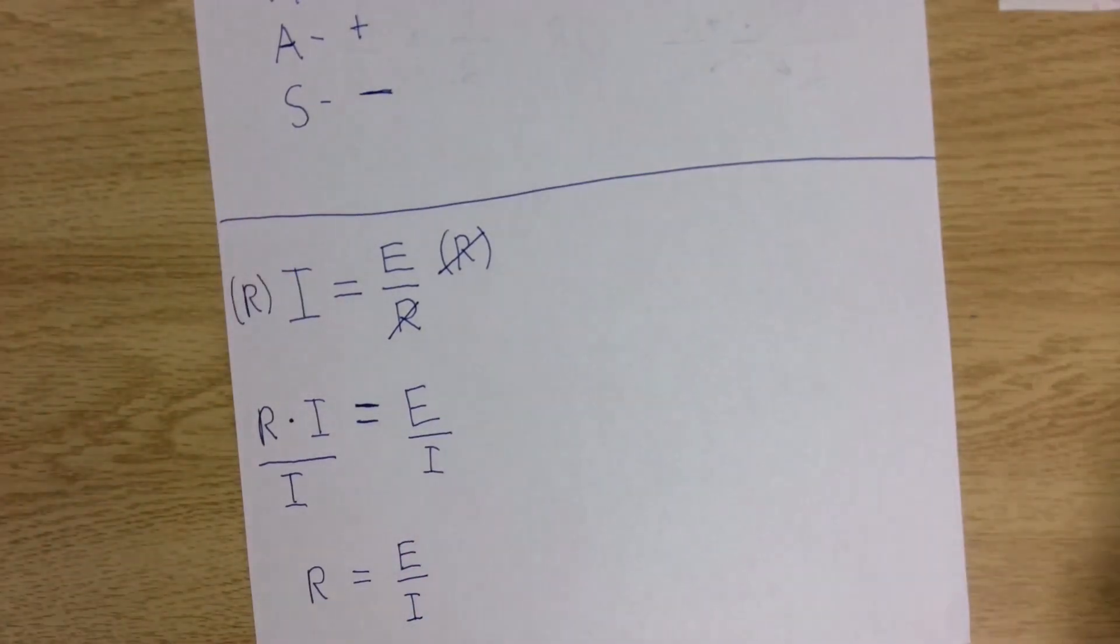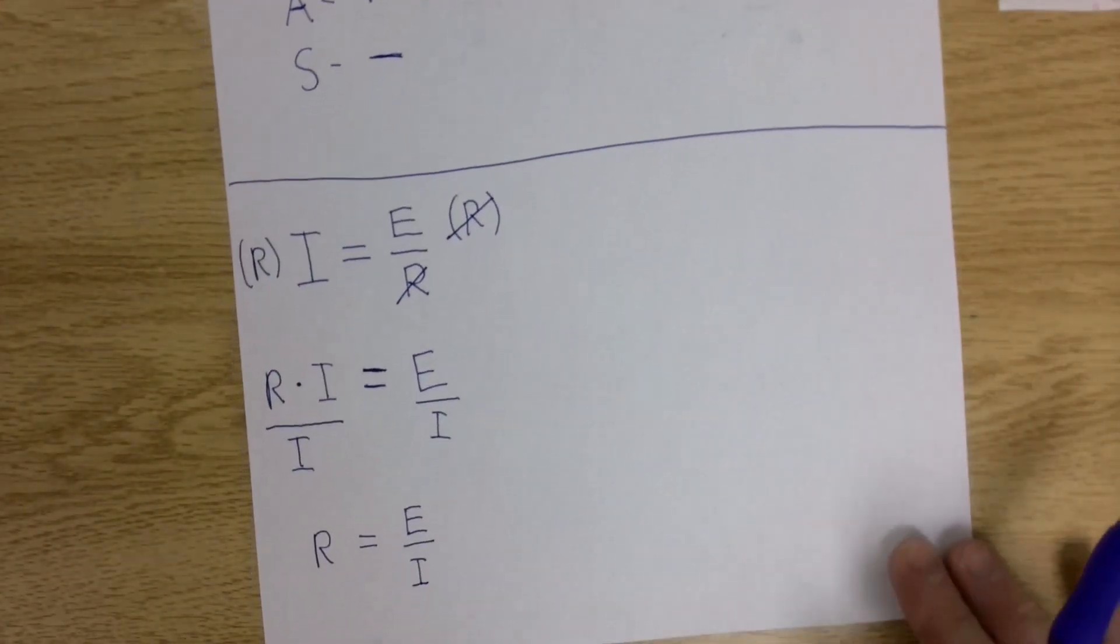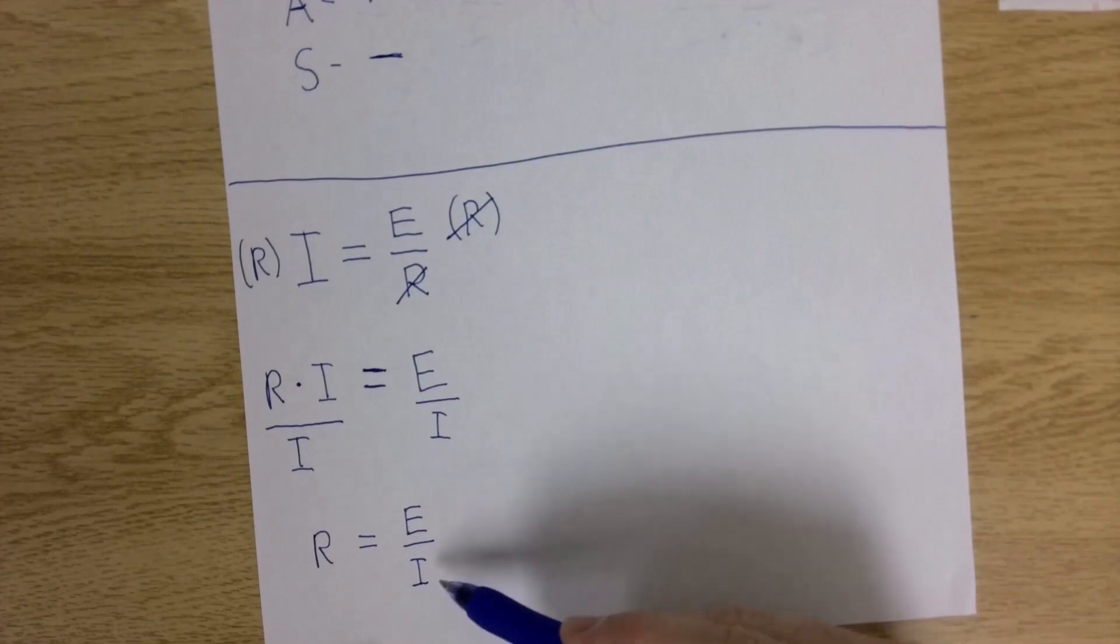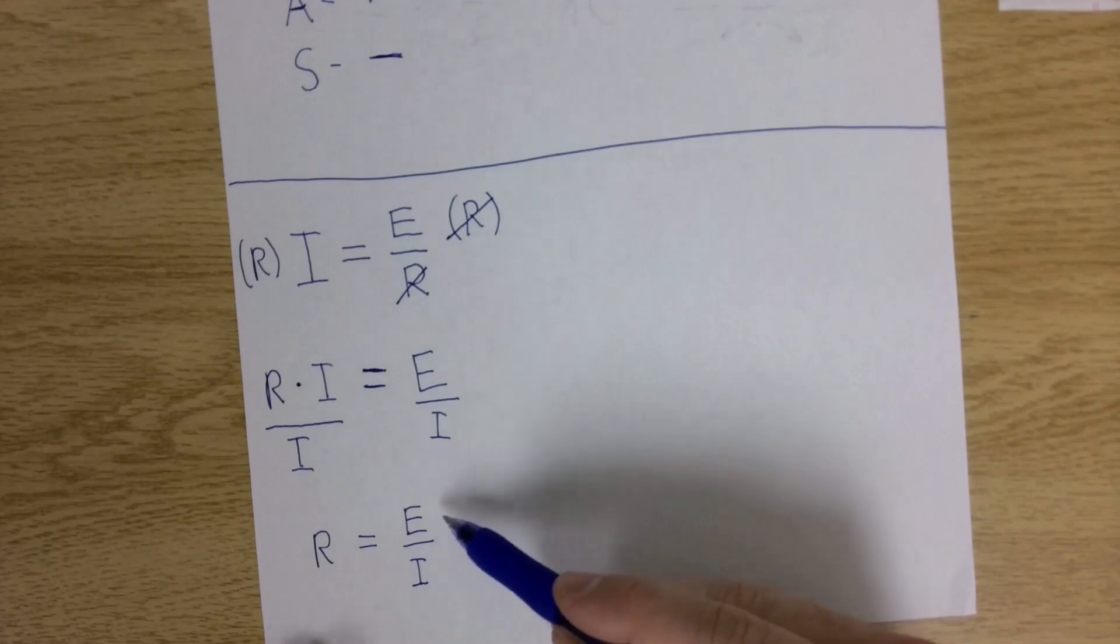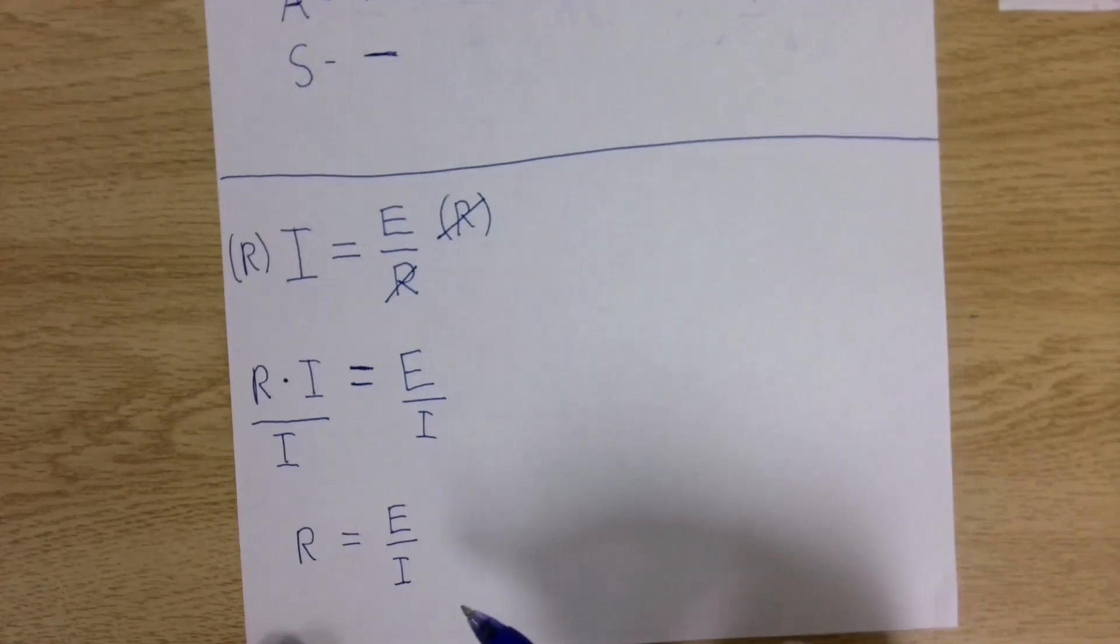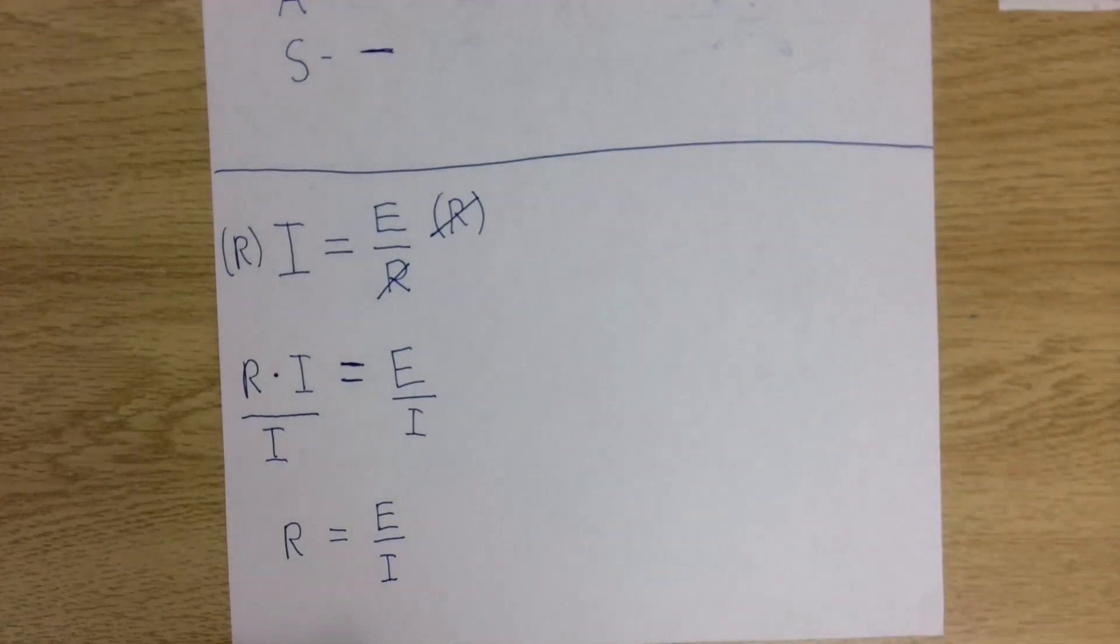Now hypothetically, if we had a value for E and I, then we simply put those values in, divide E by I, and we would get the value for R. So that's your first module of math applications. I hope this was helpful for everybody. Go through your module, do the objective questions. They're good questions, they're helpful, and as usual, if you need any help, please email me or call my office.